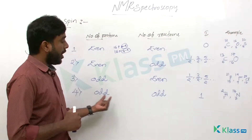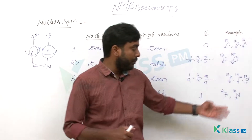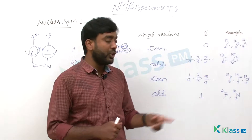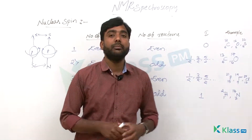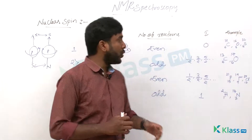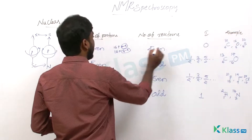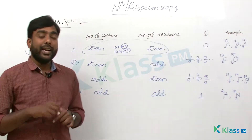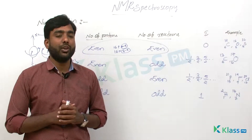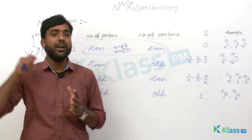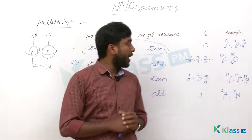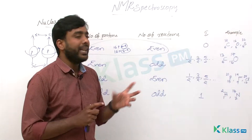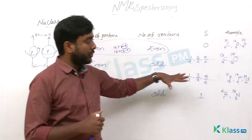In the odd-odd type, we have examples like H-1,2 (deuterium) and N-14, which has 7 protons and 7 neutrons — both odd numbers. These are also NMR active. Only when an even number of protons and an even number of neutrons are both present in a nucleus will it have no interaction with the external magnetic field, giving an I value of zero with no absorption observed.